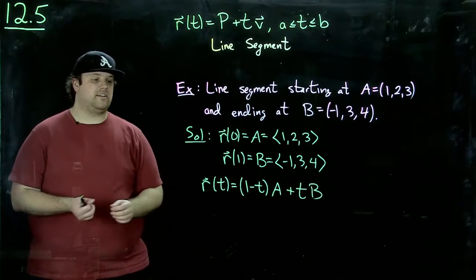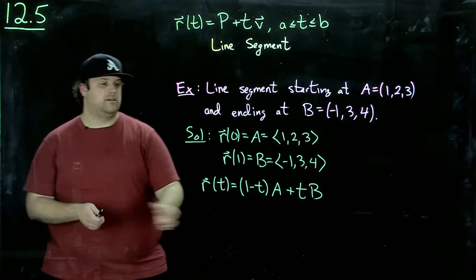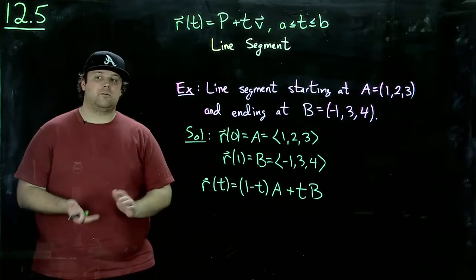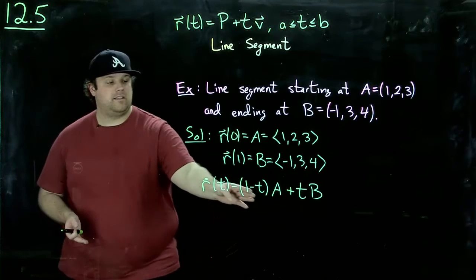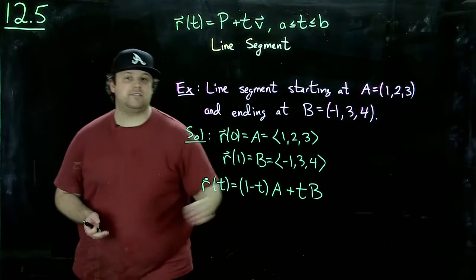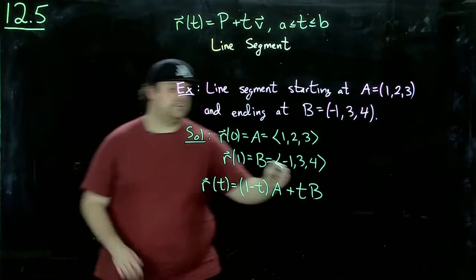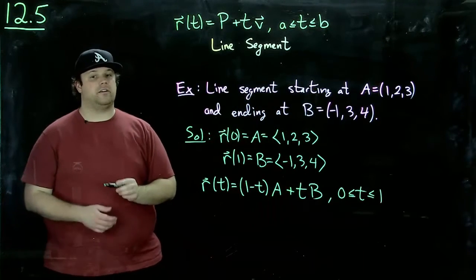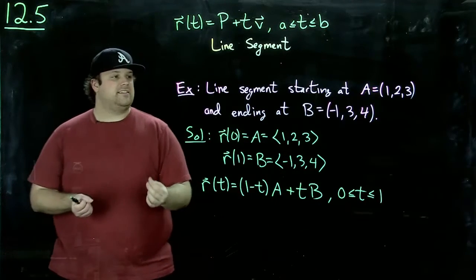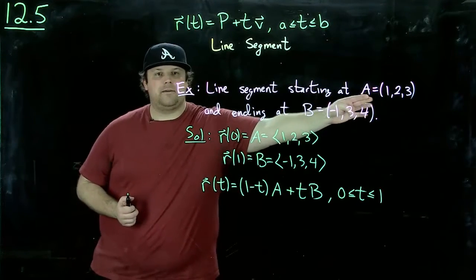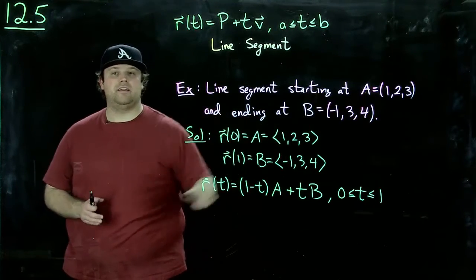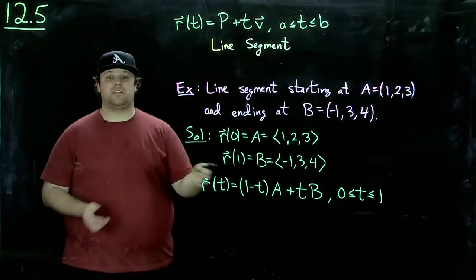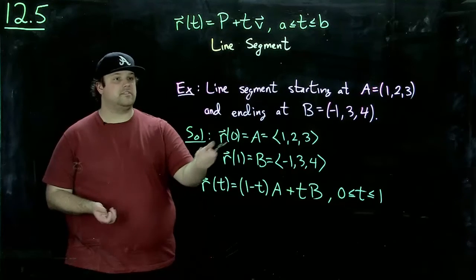So the important thing to notice here is when t is zero, this survives and this goes away. Whereas when t is one, this one goes away and this one survives. And then we restrict here that t only goes from zero to one. So then we'll get the line segment starting here at a, ending here at b, and doing nothing else. Right? So let's actually plug in our numbers now to get the solution to this example.